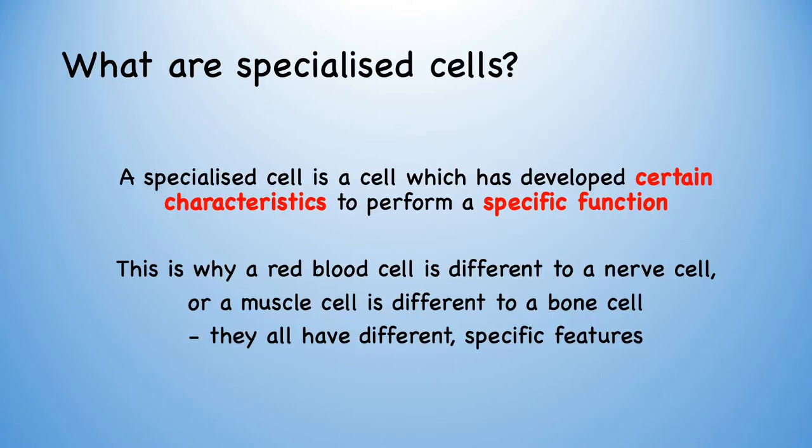So what are specialised cells? Most cells share common features such as the nucleus, cytoplasm and cell membrane, but there are also many differences between cells as they all have different jobs to do. A specialised cell is a cell which has developed certain characteristics to perform a specific function. This is through a process called differentiation — how cells become different to each other.